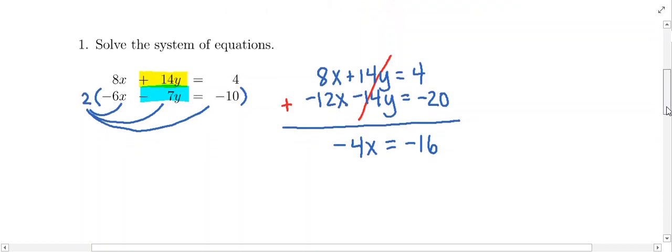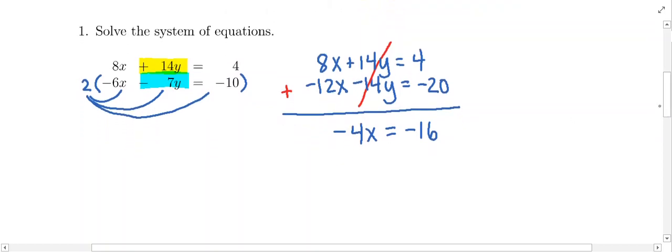So by eliminating the y, it's going to be really easy to solve for x here. We just need to divide both sides by negative 4. And so this is going to tell us that x is going to be negative 16 divided by negative 4, which is positive 4. So that's the x value that we need. This is part of the solution.